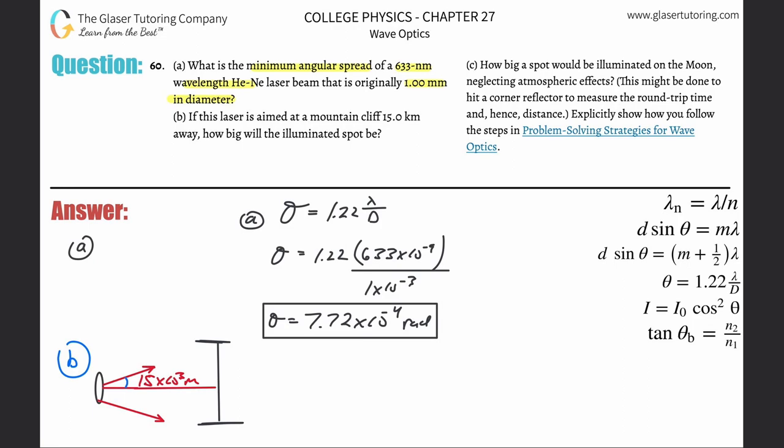We can use a little trigonometry. So we're going to try to find this y. Tangent of that angle is going to be equal to y over my distance there, I'll call it x. So y is going to be equal to tangent of that angle, 7.72 times 10 to the minus fourth, multiplied by the x value, so 15 times 10 to the third.